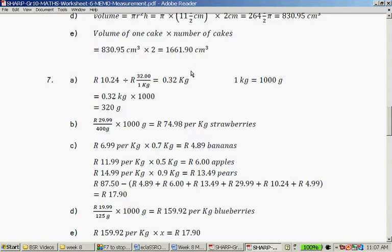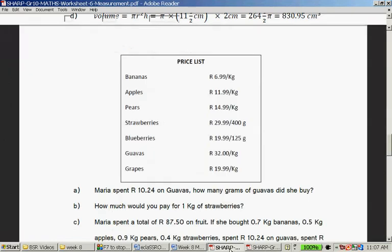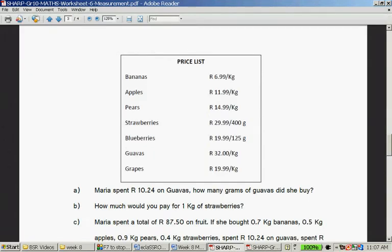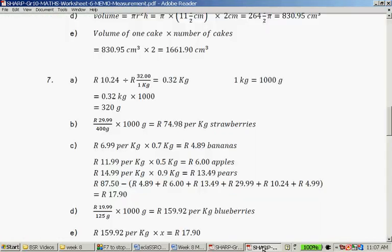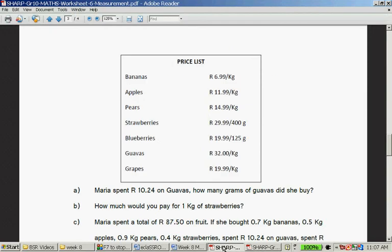Question B. How much would you pay for one kilogram of strawberries? So, strawberries is per 400 grams. So you take the price, you divide by 400, you times by 1,000. Remember there is 1,000. So that's the price of 1 gram, and there's 1,000 grams in a kilogram. So you take the price of strawberries, divide by 400 times 1,000. So it gives you 74.98 rand per kilogram of strawberries.